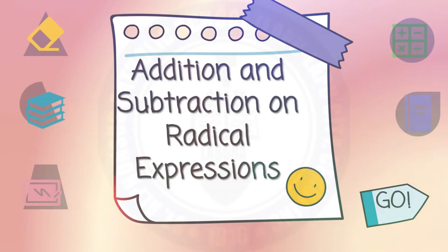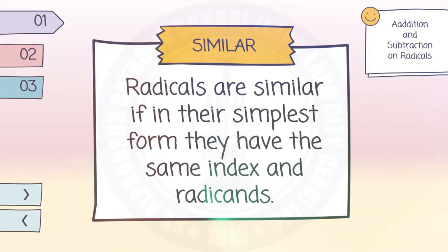Addition and Subtraction on Radical Expressions. Similar radicals are similar if, in their simplest form, they have the same index and radicand. Two radicals can be similar if they have the same index and the same radicand.